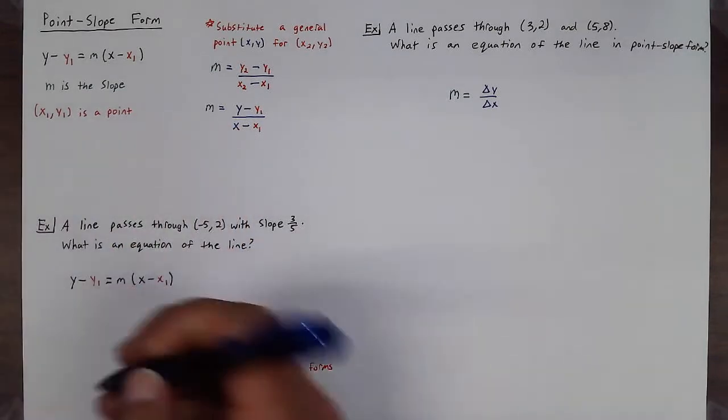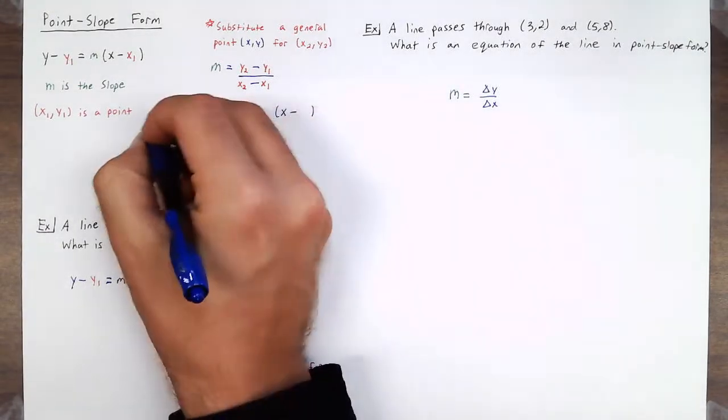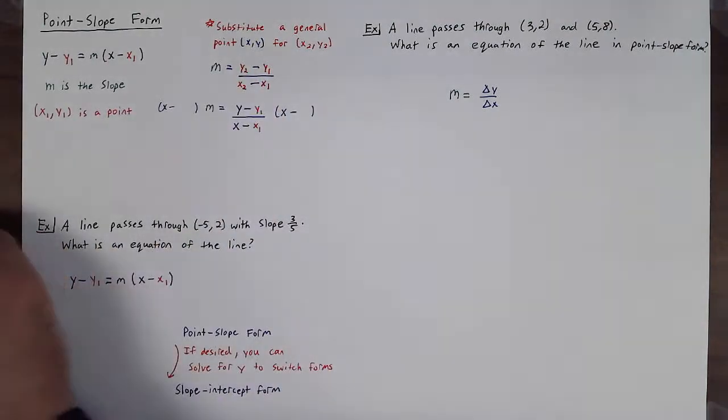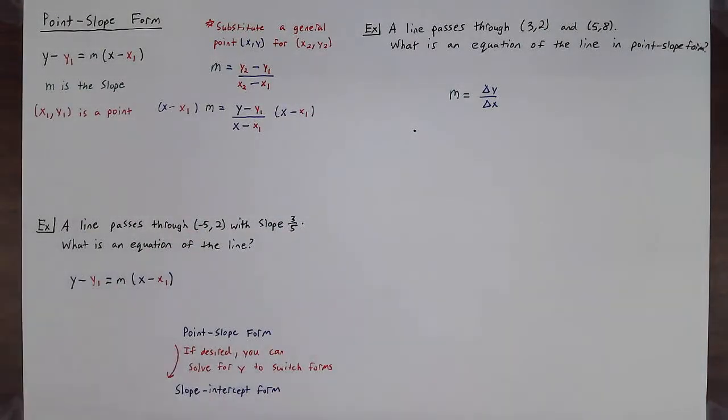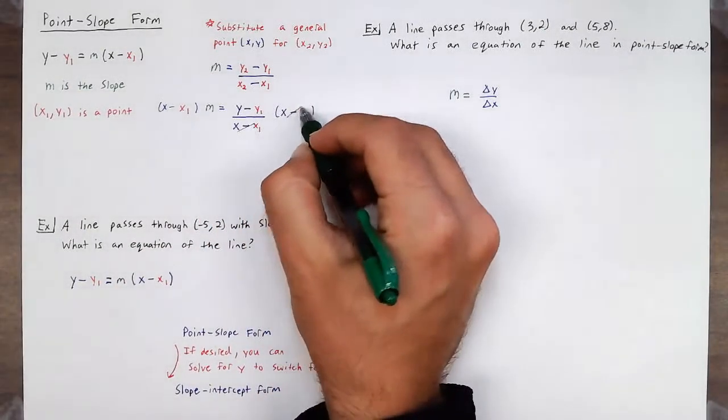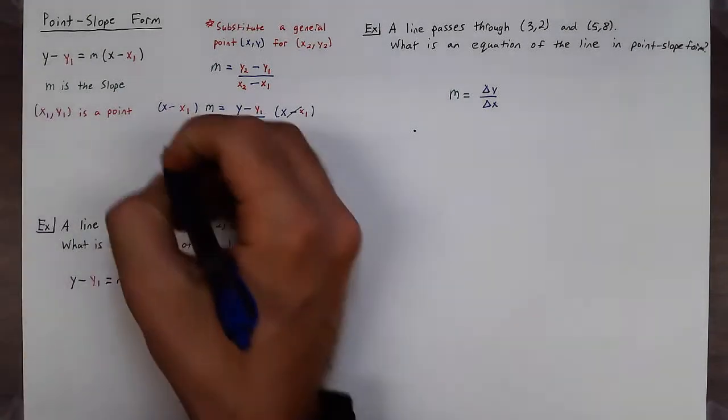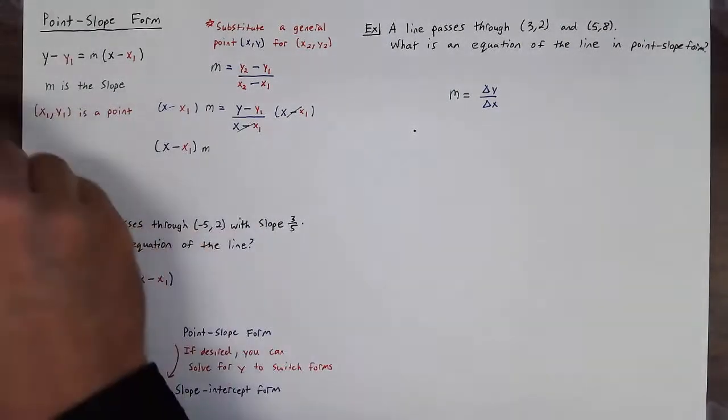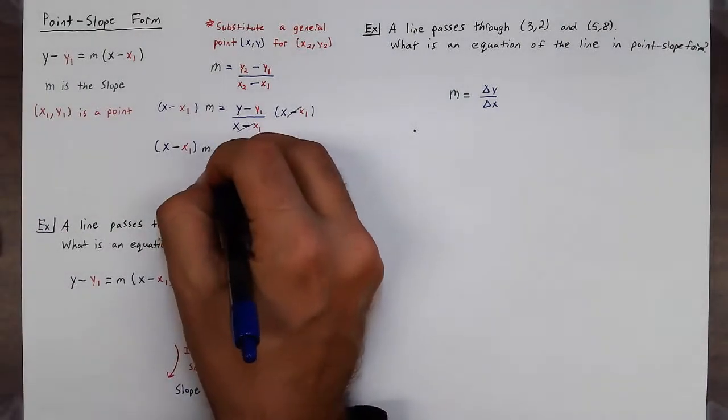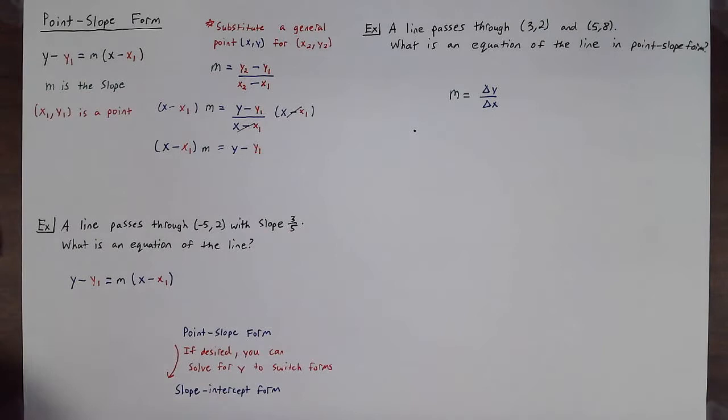If I were to multiply each side of the equation by x minus x1, the x minus x1 over here will cancel out on the right side of the equation and you'll be left with x minus x1 times m equals y minus y1.